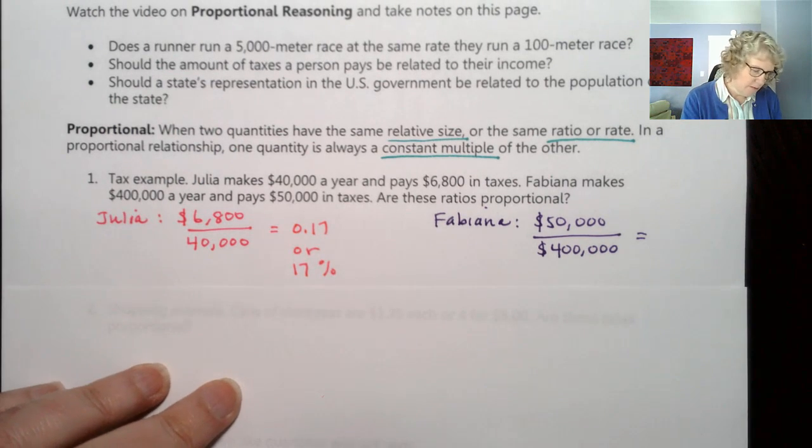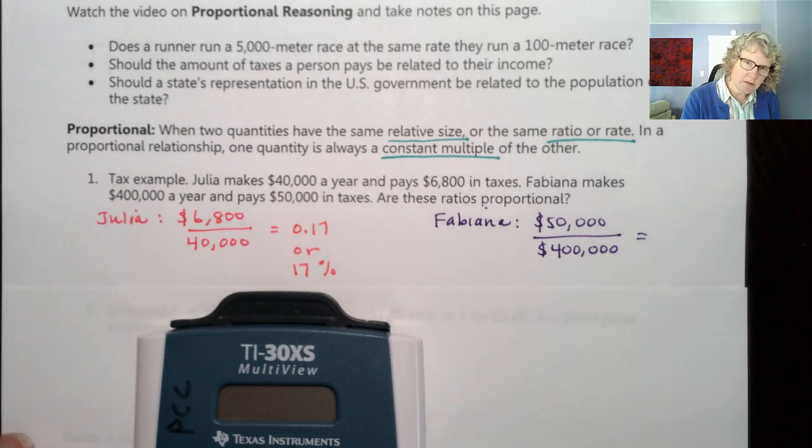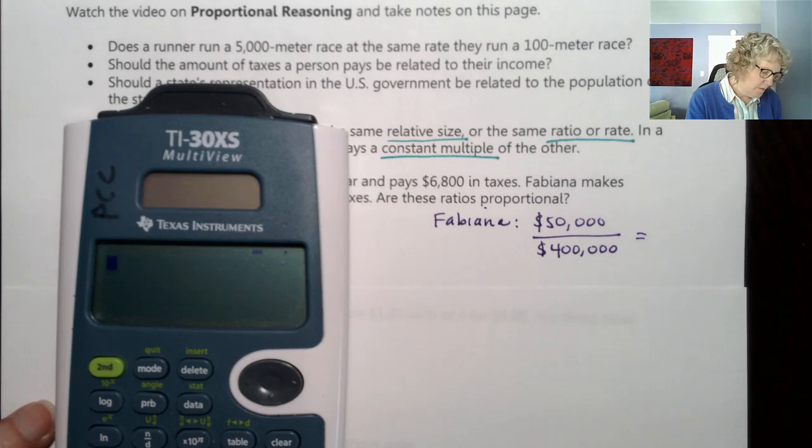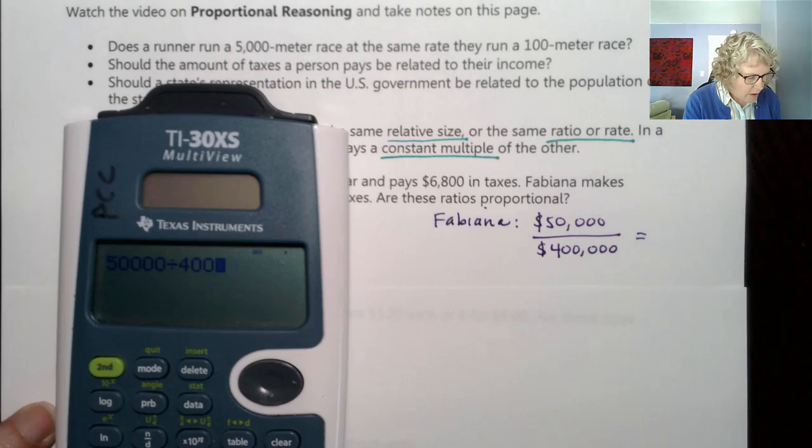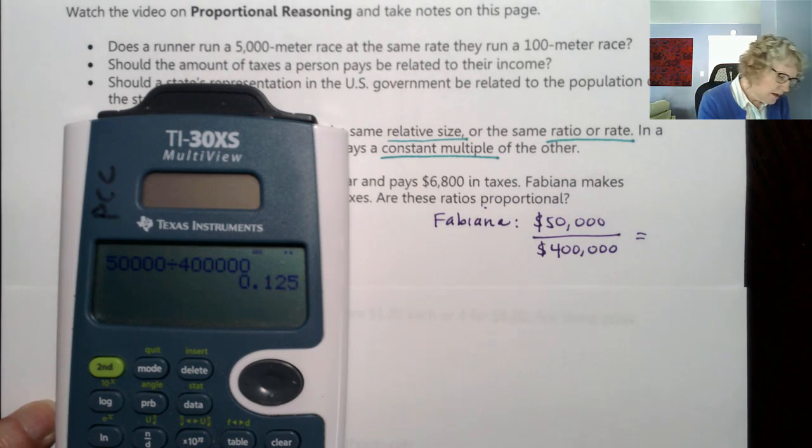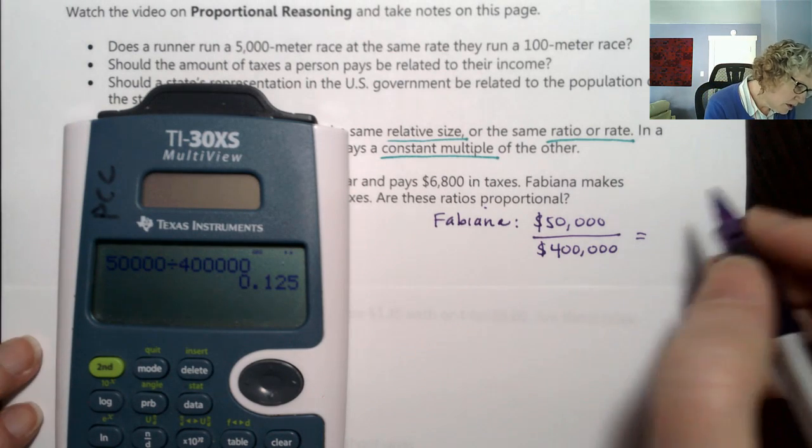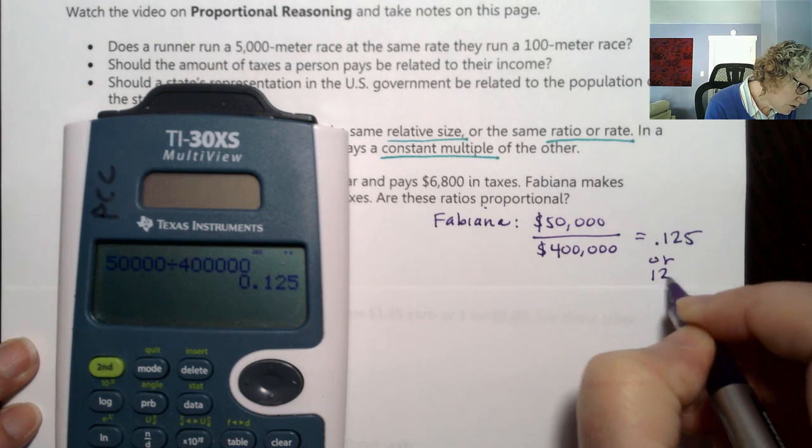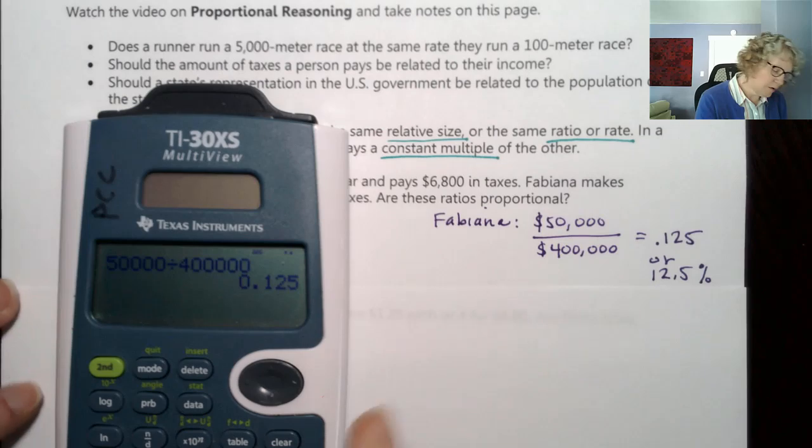And let's see about Fabiana. So let's do, I'm going to cover that up for just a second. $50,000 divided by $400,000. And that is equal to 0.125, or 12.5%.